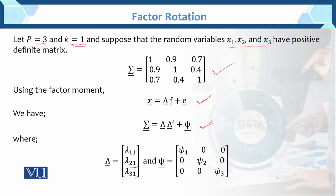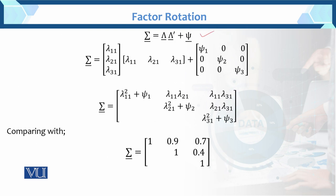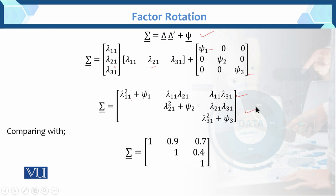Psi is the error variance - psi which is equal to psi_1, psi_2, and psi_3. Here the model variance-covariance matrix sigma is equal to lambda lambda prime plus psi. Lambda multiplied by lambda prime gives us: lambda_11 squared plus psi on the diagonal, lambda_11 into lambda_21, lambda_11 into lambda_31 as off-diagonal elements, lambda_21 squared plus psi, lambda_31 squared plus psi. यह हमारे पास variance covariance structure आ गया.